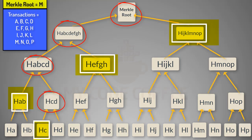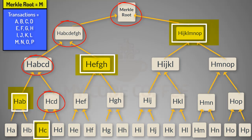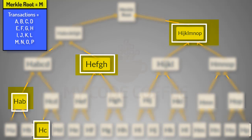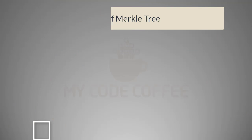If you have N transactions, you will need only log base 2 of N values to calculate the Merkle root for any transaction. This becomes very important as the number of transactions increases, because for a very large number of transactions in a block, if you want to prove that one of them belongs to this block, you need very few hash values. This set of hash values which is sufficient to calculate the Merkle root and prove that a particular transaction belongs to that block is called the Merkle path.